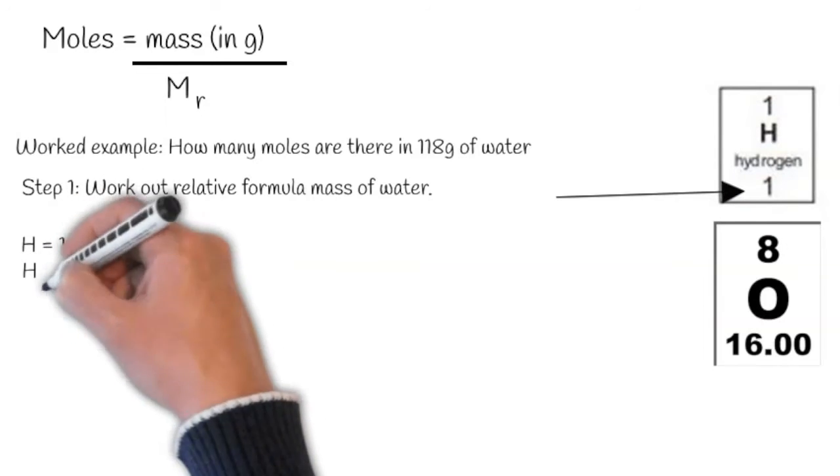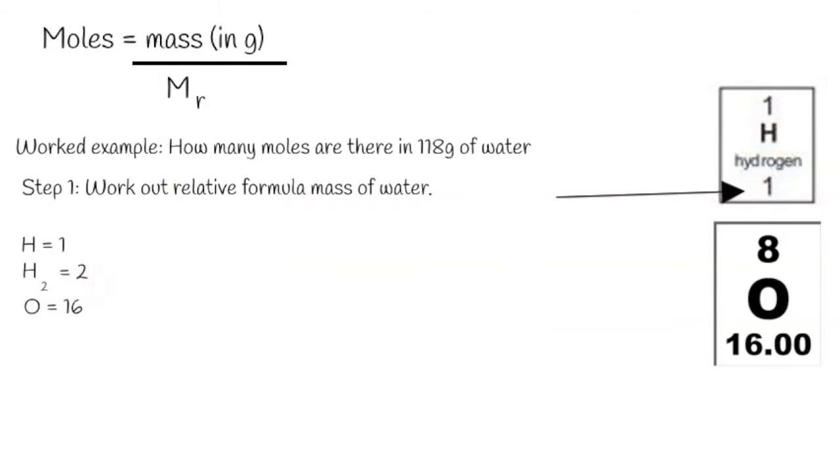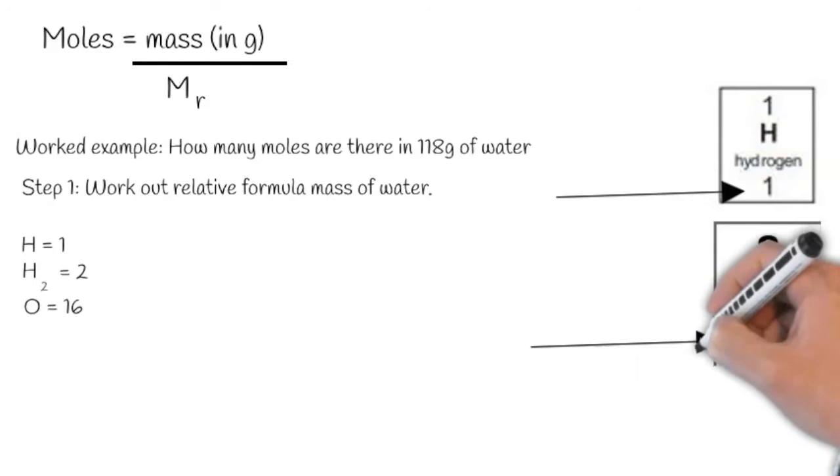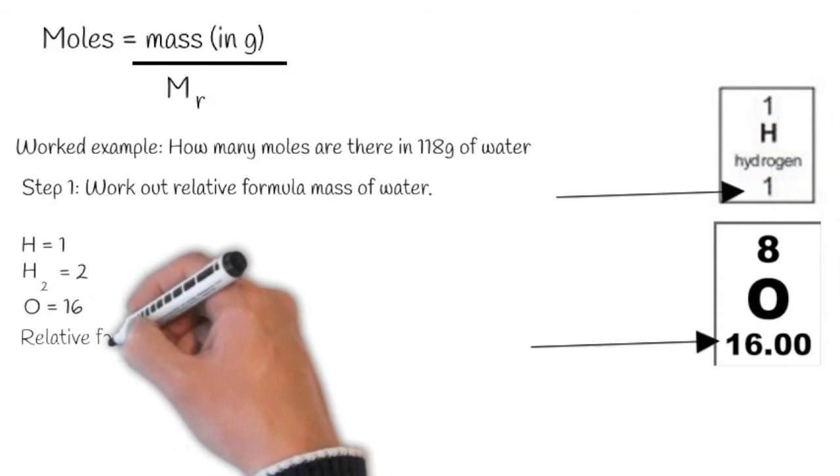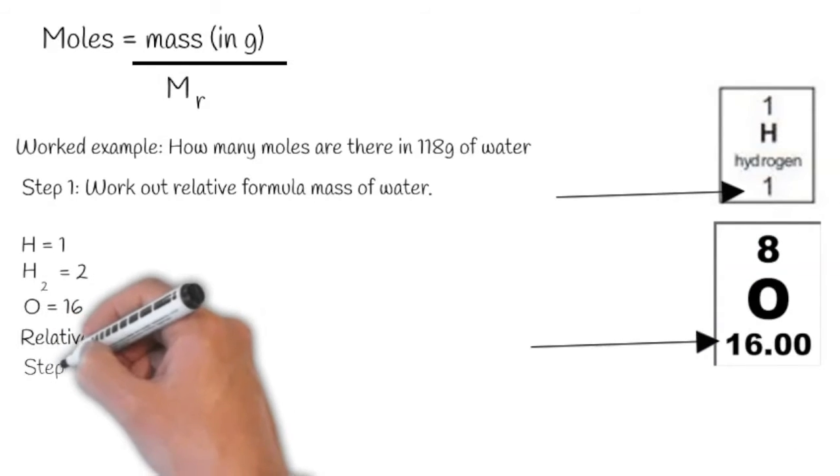Hydrogen has a relative mass of one, and there are two hydrogens, so therefore it's two, and oxygen has a relative mass of 16. The relative formula mass is therefore 18.